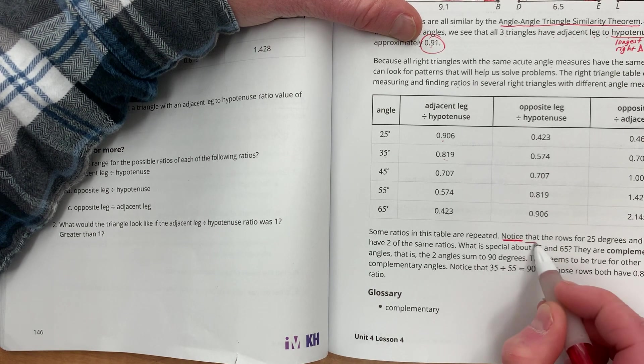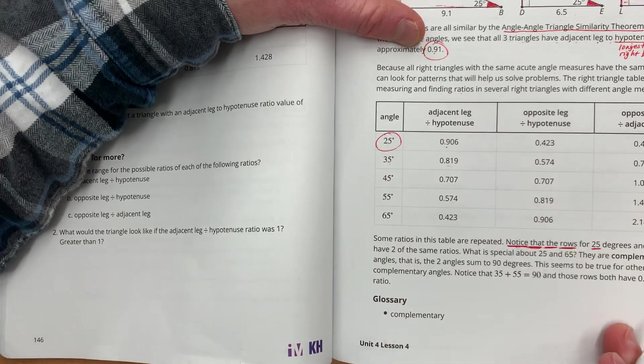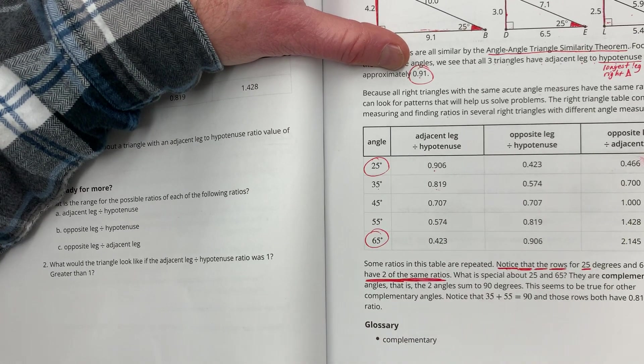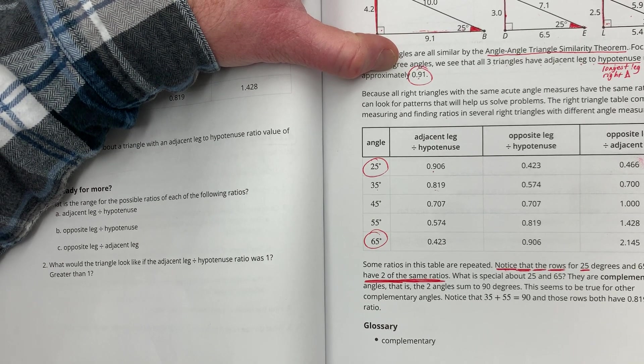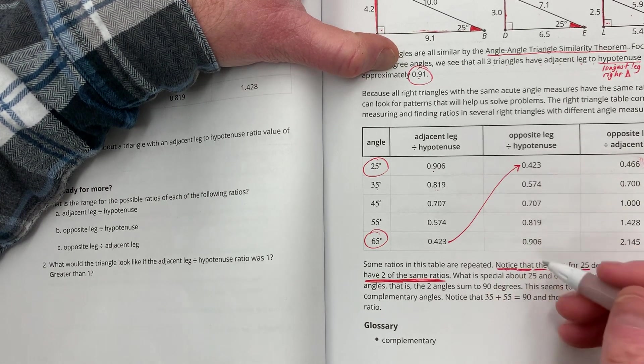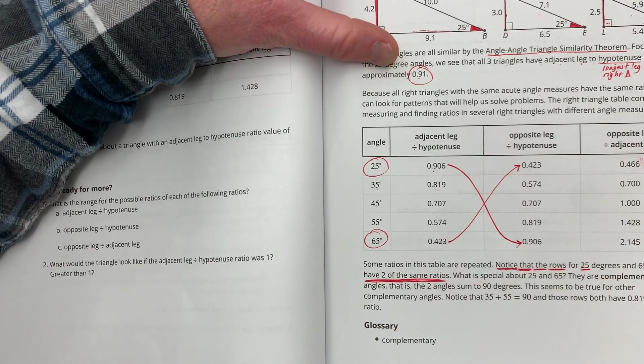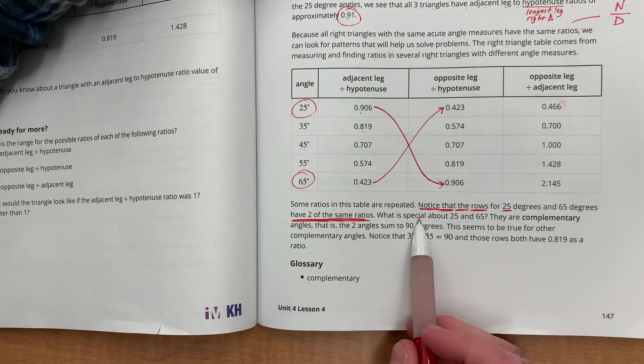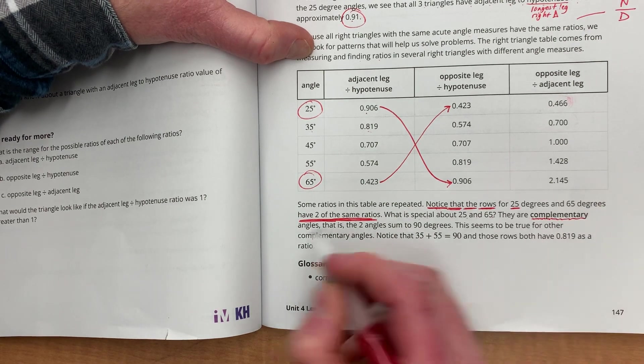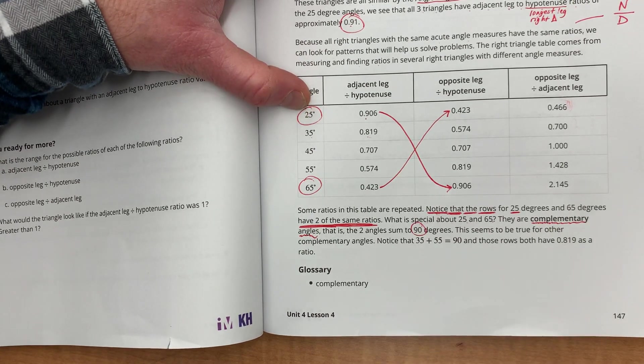So, there's another thing that you need to notice. So, notice that the rows for 25 degrees and 65 degrees have two of the same ratios. 0.423 and 0.906. What is special about 25 and 65? They are complementary angles. Complementary angles add up to 90 degrees.